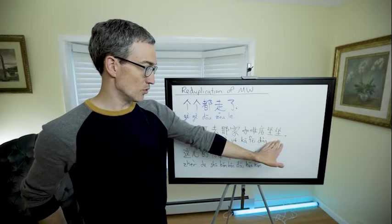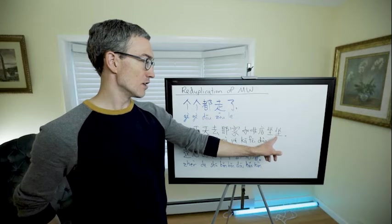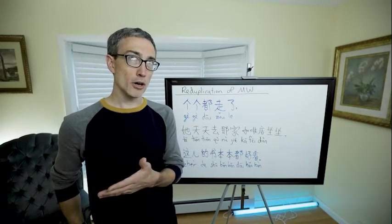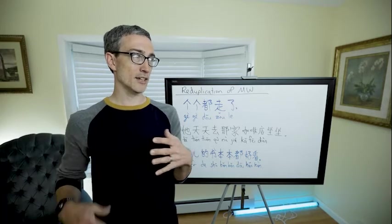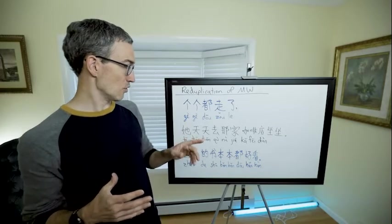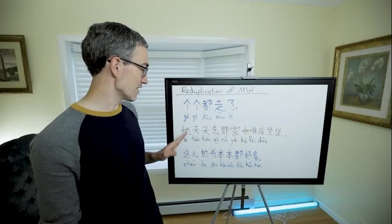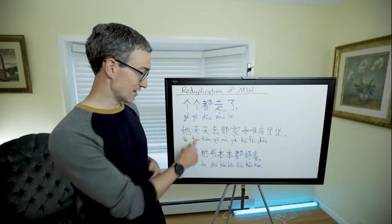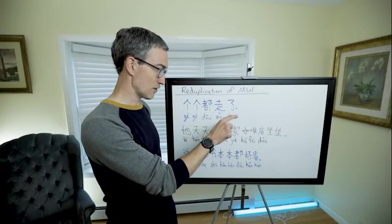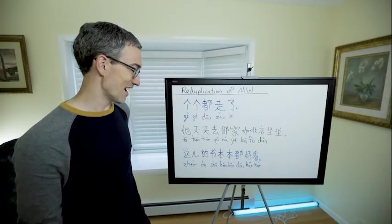坐坐, now 坐坐 is, oh I didn't put the pinyin there, it's z-u-o, fourth tone, 坐坐 means to sit. And remember, reduplicating a verb makes the feeling of that verb kind of light and casual. And so to translate this whole sentence is every day, that's the 天天, every day 她天天, every day she goes to that coffee shop to sit, sit, to sit down and hang out.